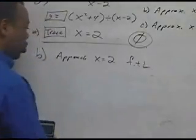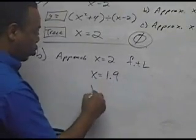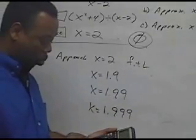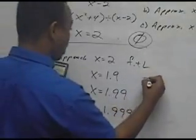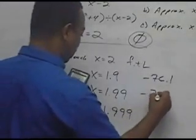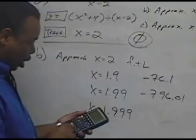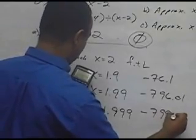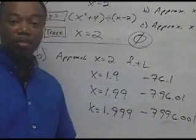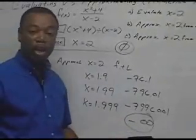Now let's approach from the left. We'll use x = 1.9, then 1.99 (even closer to 2 on the left), and 1.999. Entering 1.9 gives -76.1. Entering 1.99 gives -796.01. This number is getting larger and larger but negative — it's going to negative infinity. So as x approaches 2 from the left, the answer is negative infinity.